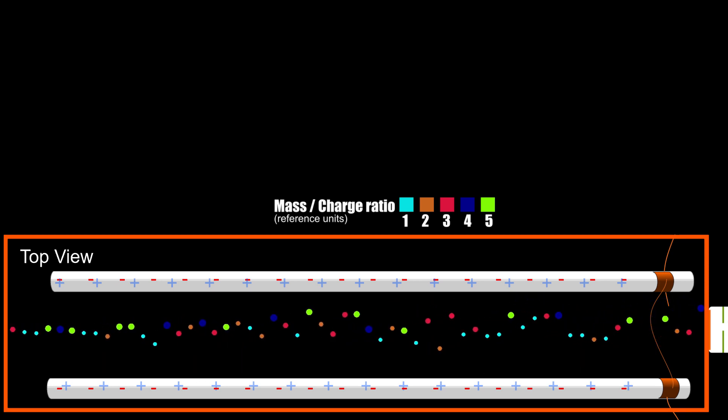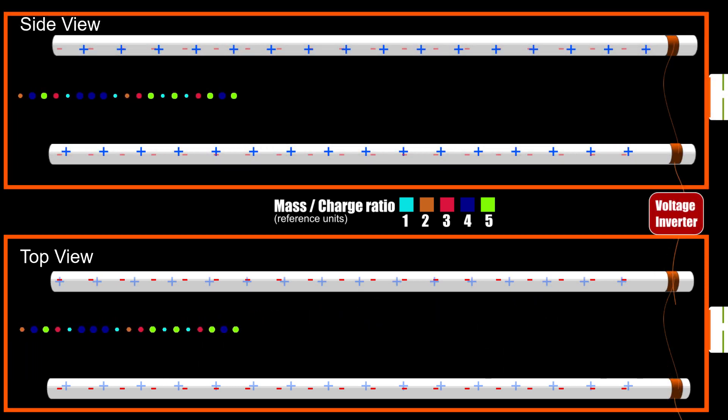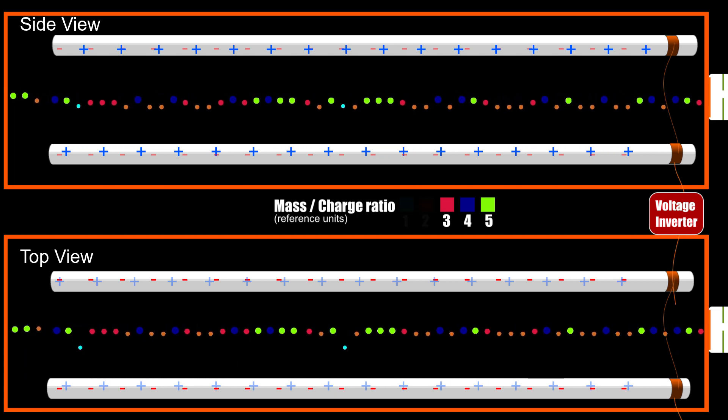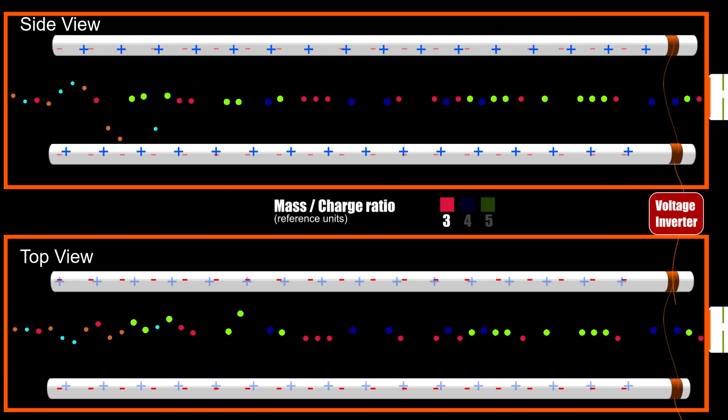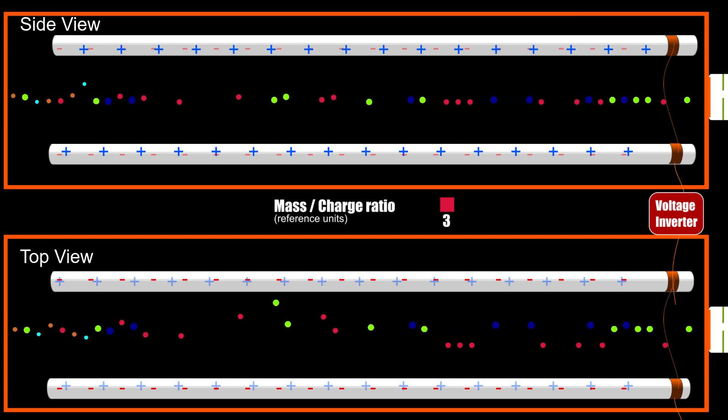So now, the second set of rods acts like a low-pass mass-to-charge ratio filter. If we now turn back on the first set of rods which operates as a high-pass mass-to-charge ratio filter, its effect will be combined with the effect of the second set of rods which operates as a low-pass mass-to-charge ratio filter. This combination effectively creates a high quality band-pass filter which can be tuned to a single mass-to-charge ratio value, effectively detecting a specific molecule.